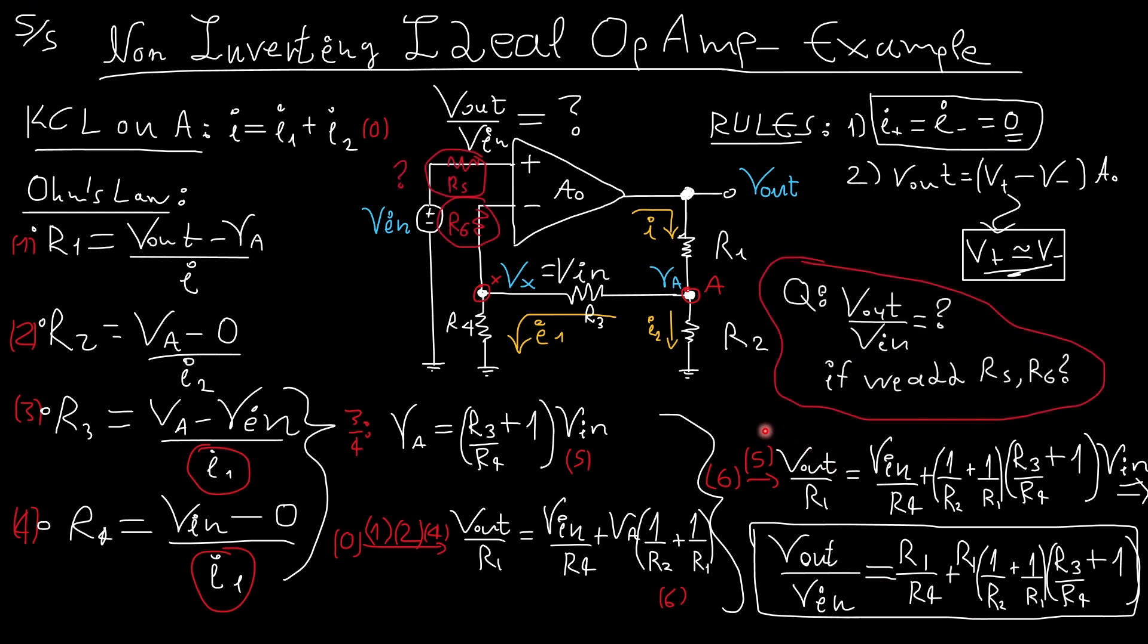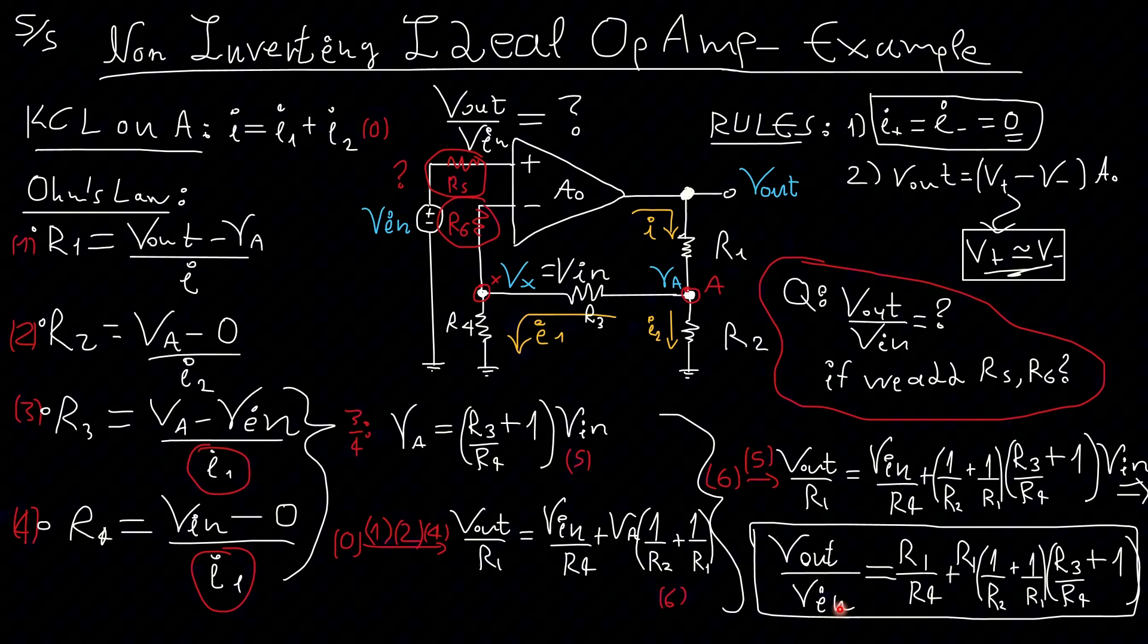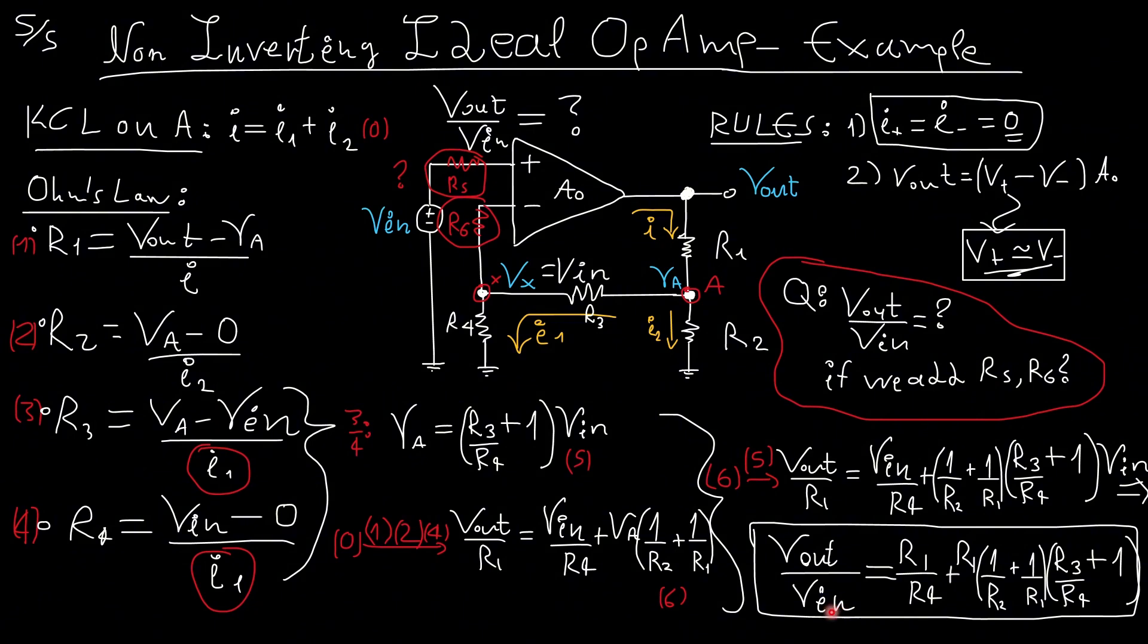Now I have a little quiz for you. What would happen if we had resistance here and also here? Would our results actually change? I'll leave this up to you. Write to me in the comments below. If you have been paying attention, this would be very easy for you.